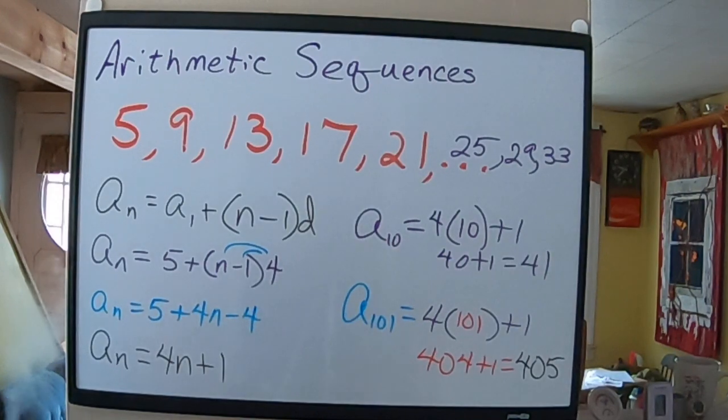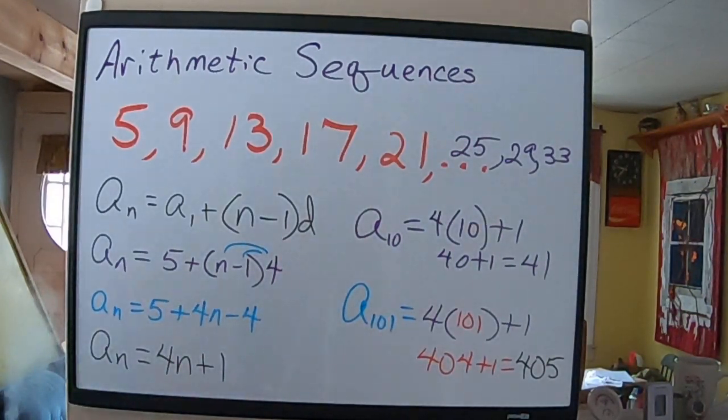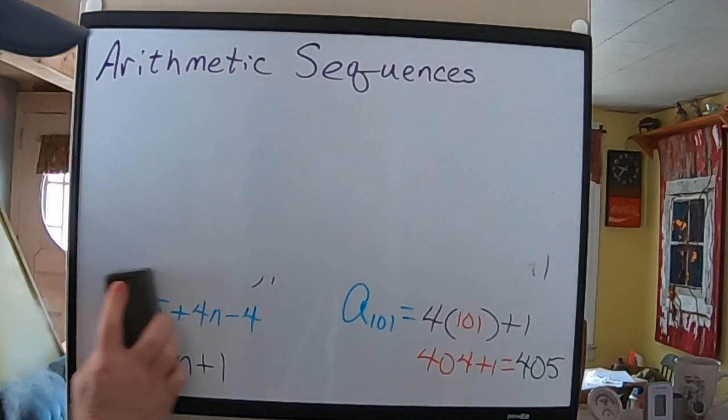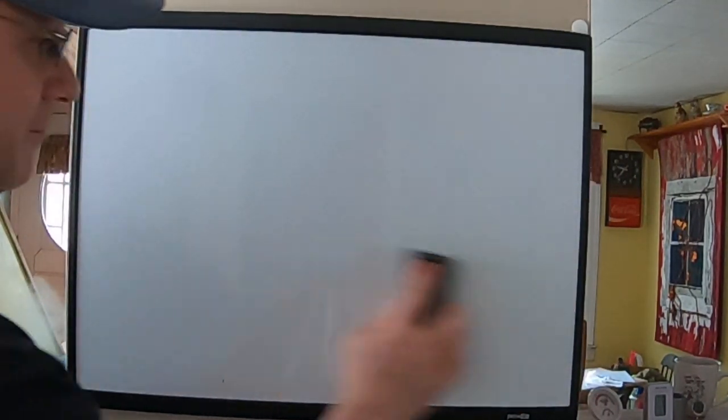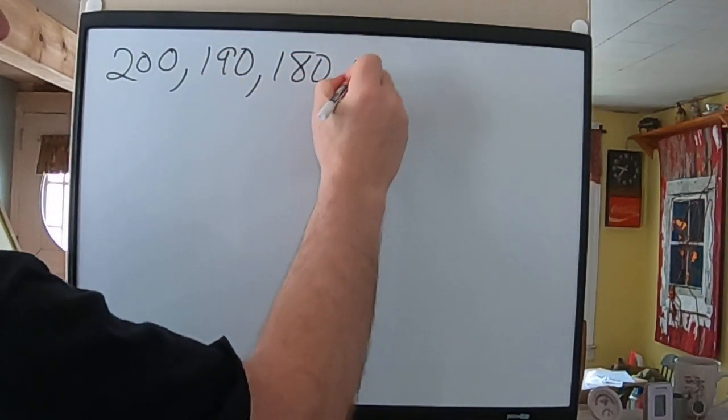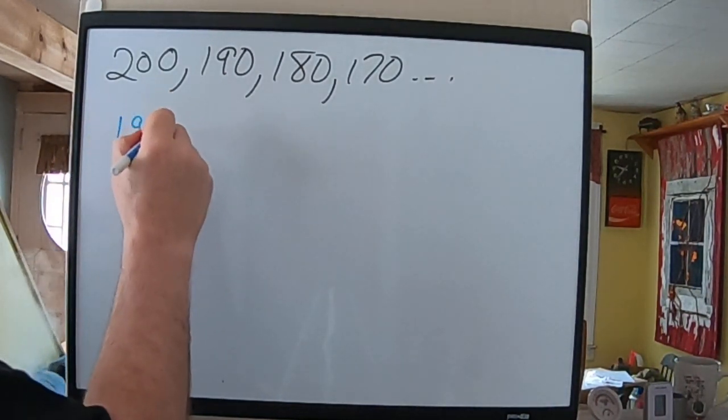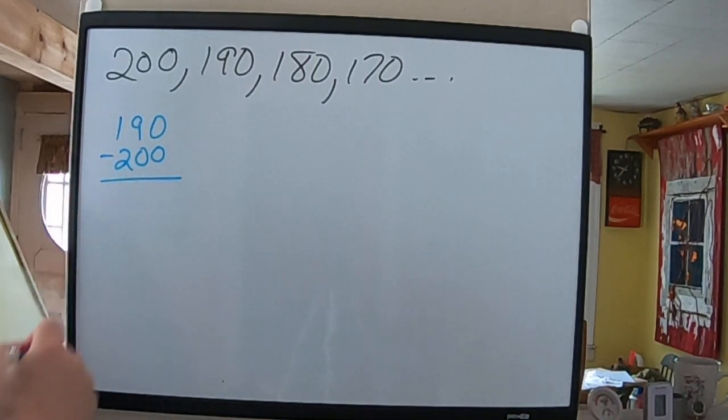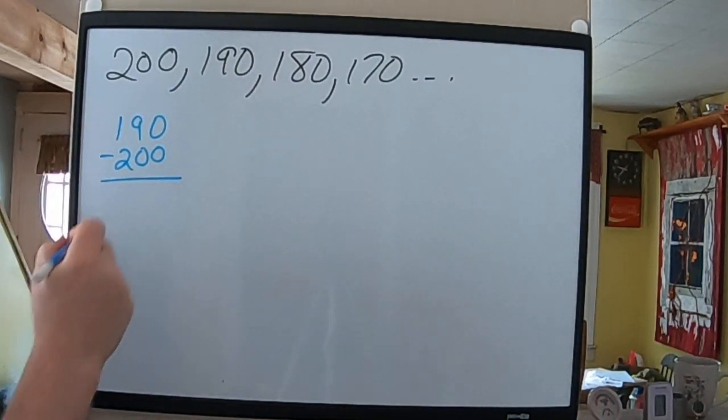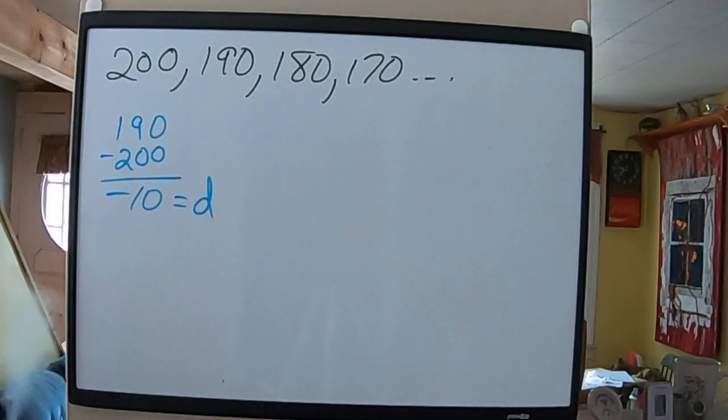And there was something else I wanted to demonstrate for you. As I said before, D does not have to be positive. D could be negative. For example, 200, 190, 180, 170. You can see here that when we take our second term minus our first term, we're going to, the big number is on the bottom. So, that's going to mean I'm going to get a negative answer. So, a negative 10 would be D. So, that's an example of something that has a negative value for D.